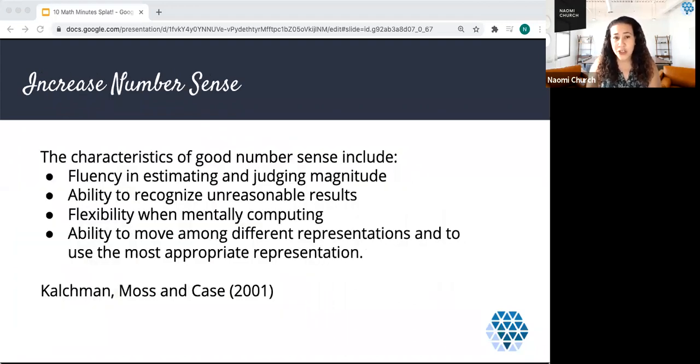This strategy also increases number sense, and when we build a child's number sense, it promotes thinking instead of just computing. The characteristics of good number sense include fluency in estimating and judging magnitude, the ability to recognize unreasonable results, flexibility when mentally computing, and the ability to move among different representations and to use the most appropriate representation. And when I model the strategy in just a moment here, you'll see how all of these fit together.